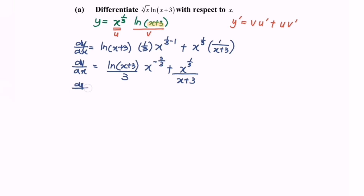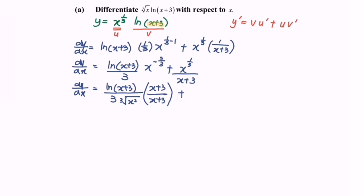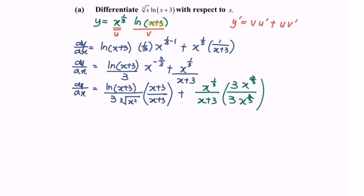So dy/dx is equal to ln(x + 3) over 3 times the cube root of x squared, multiplied with (x + 3), plus x to the power of 1/3 over (x + 3), multiplied by 3x to the power of 2/3 in order to equate the denominator. Then expand and simplify.